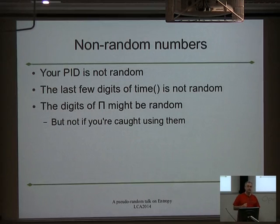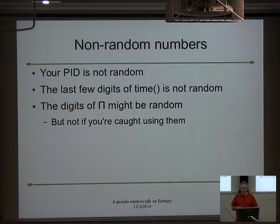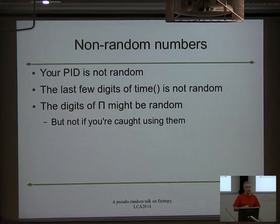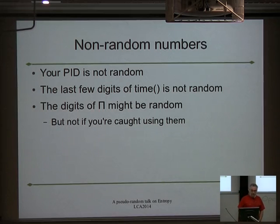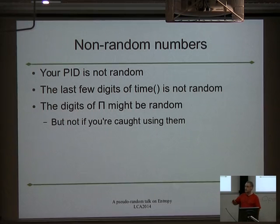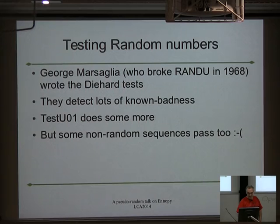Just a couple of things that aren't random: Process ID is not random, unless you're running OpenBSD, in which case it might be random — and you're also random for running OpenBSD. Time is not random — you might think you don't know when your program initiated, but somebody else might. And the digits of pi probably are random, but as long as nobody knows you're using them, you're fine. If they know you're using them, your entire output is known — you're completely deterministic.